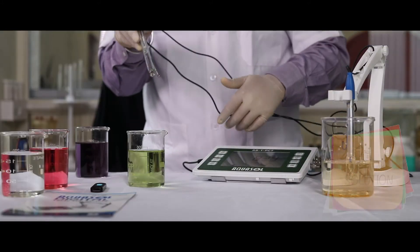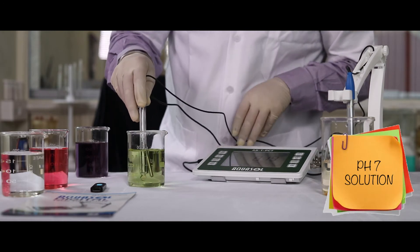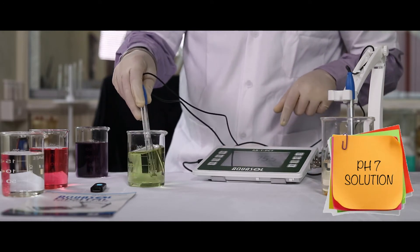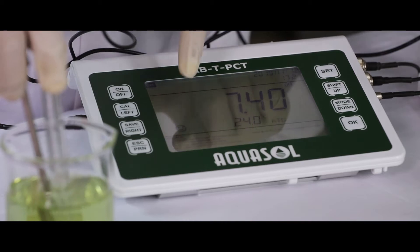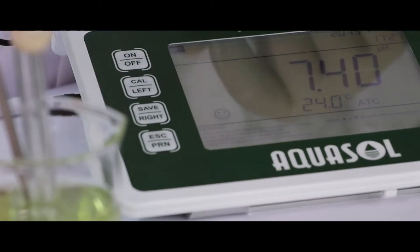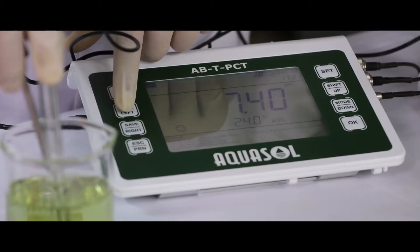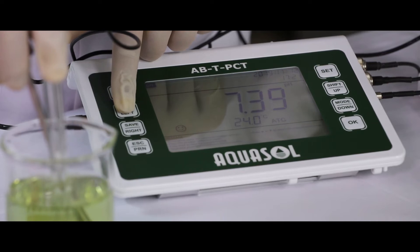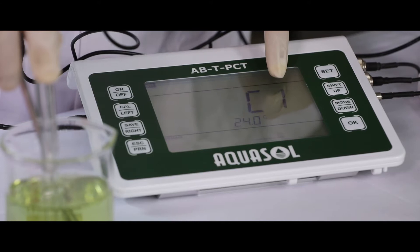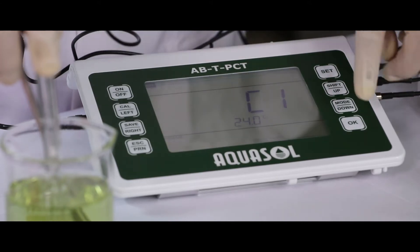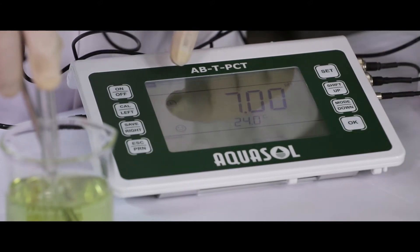For calibration of pH, dip the pH electrode in the standard pH 7 solution. Once the readings stabilize, a smiley emoji will appear on the display. Now press CAL key to calibrate. C1 indicates pH 7 solution. Press OK to continue.